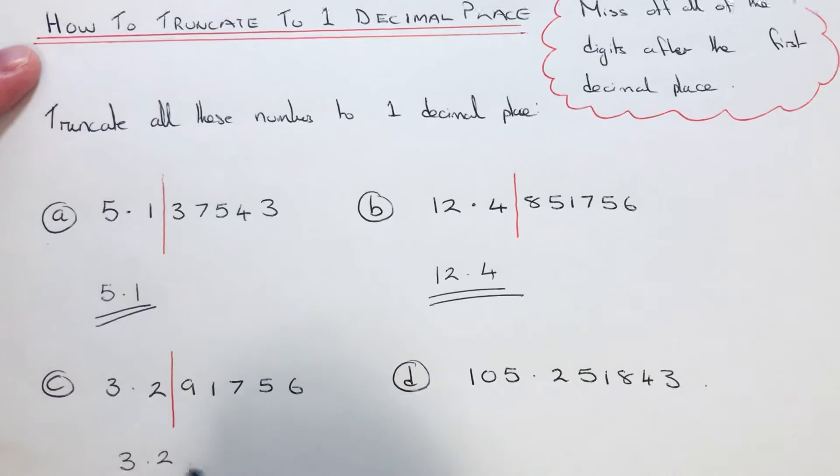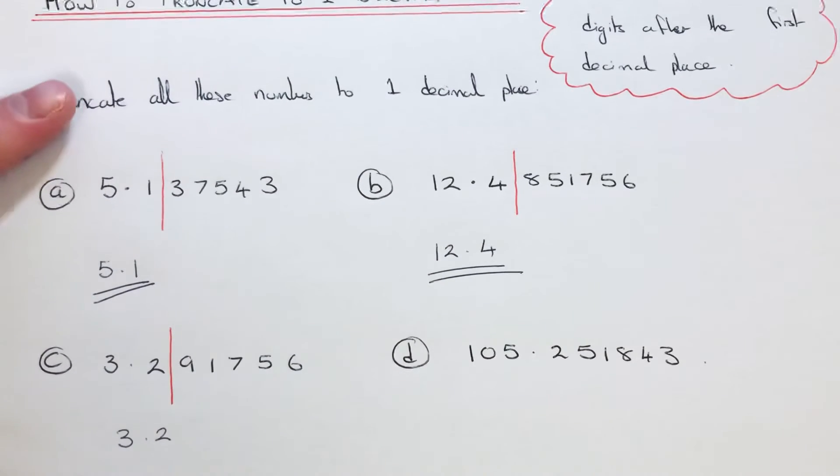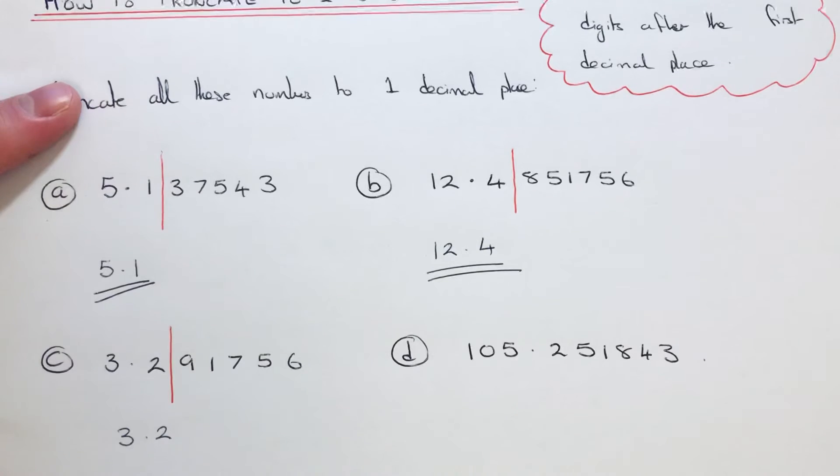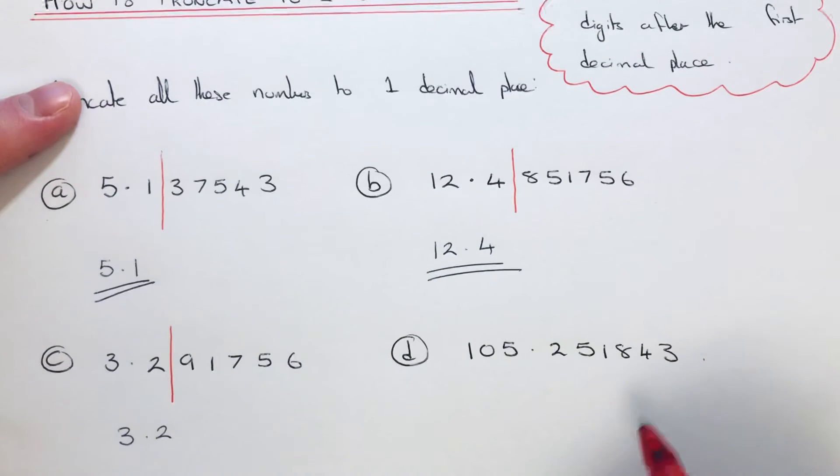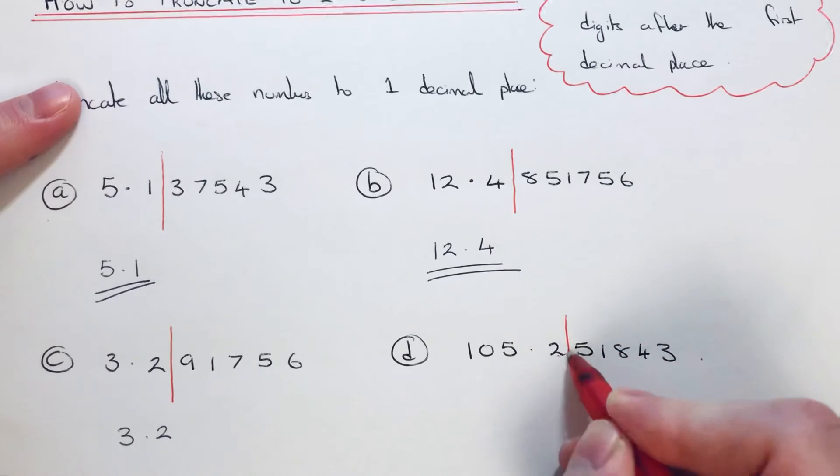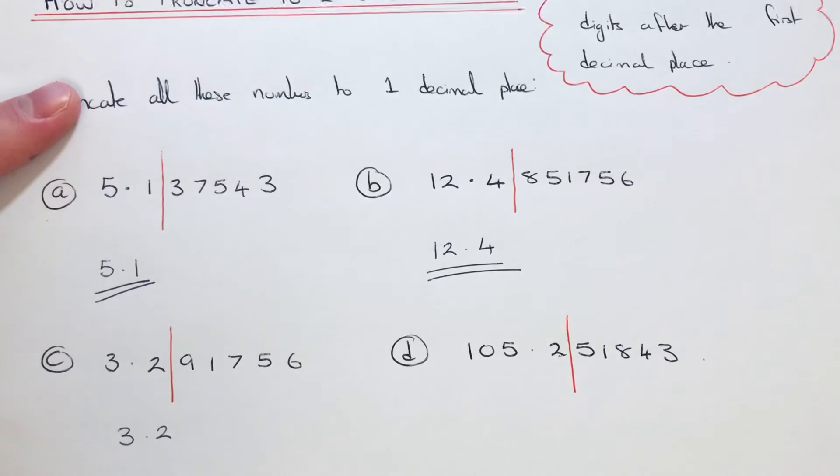The fourth example is 105.251843. Our first number after the decimal point is here, so we're cutting the number off here. Again, just write all these digits before the line, so it's 105.2.